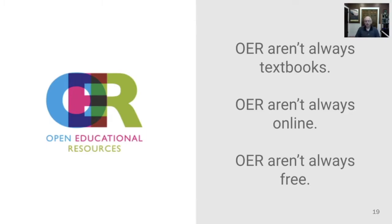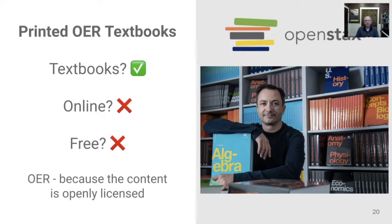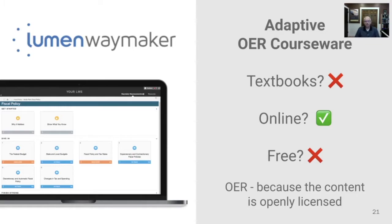Let's come back to this idea that OER aren't always textbooks, they aren't always online, and they aren't always free, and look at that with a couple of examples. First, think about printed OER textbooks — are they textbooks? Yes. But are they online? No, they're printed. And are they free? No, because ink and paper cost money. But we would still call these OER because the content is openly licensed. Textbooks from OpenStax are openly licensed, so even though they're not online and not free in print form, we call them OER. Think about adaptive OER courseware — it's definitely not a textbook, it is available online, but it's not free. We'd still call it OER because the content is openly licensed and you have all five R permissions.